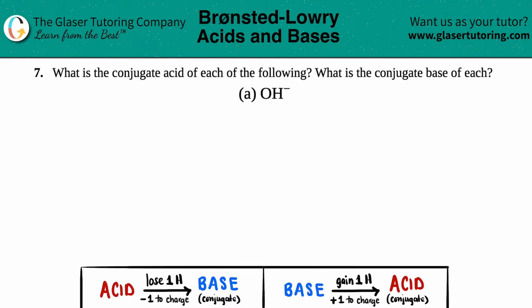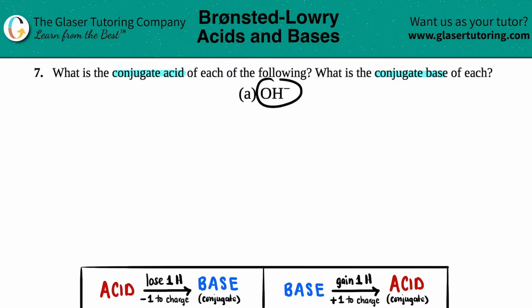Number seven: what is the conjugate acid and the conjugate base of each of the following? For letter A, we have to find the conjugate acid and the conjugate base of OH⁻, which is hydroxide.